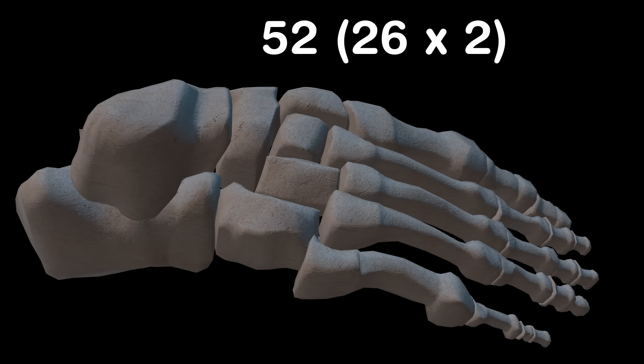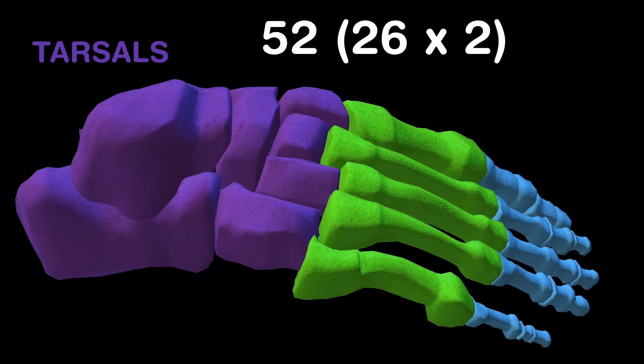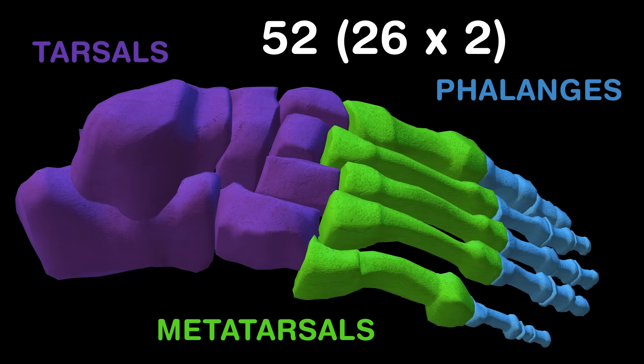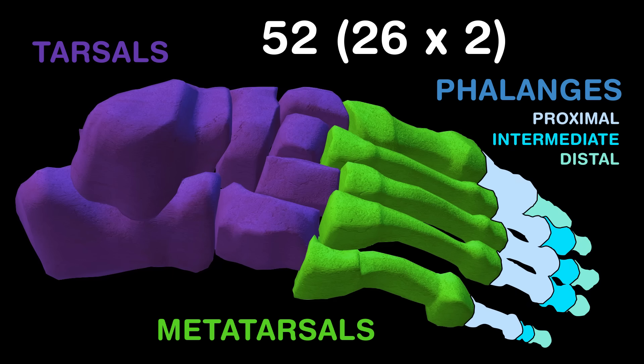There are 52 bones in your ankles and your feet. Once you know the hand bones, these will be a treat. There are the tarsals, metatarsals, and phalanges — remember that they are proximal, intermediate, and distal.